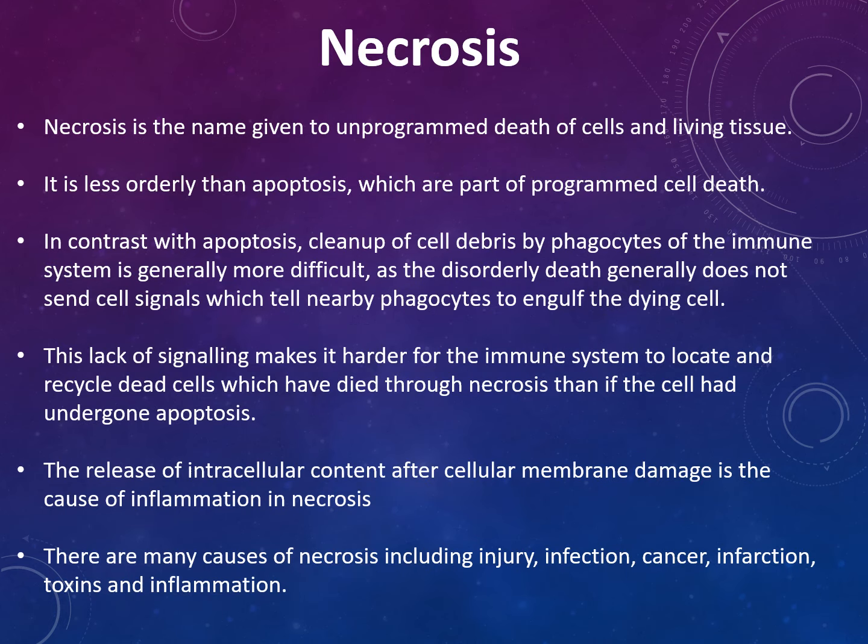Necrosis is the name given to unprogrammed death of cells and living tissues. It is less orderly than apoptosis, which is part of programmed cell death. In contrast to apoptosis, cleanup of cell debris by phagocytes of the immune system is generally more difficult, as the disorderly death generally does not send cell signals to tell nearby phagocytes to engulf the dying cell. This lack of signaling makes it harder for the immune system to locate and recycle dead cells that have died from necrosis.